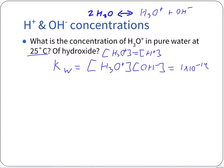For pure water, we would expect that there's no additional hydrogen ions or hydronium being added, and no additional hydroxide being added. One hydronium is made for every one hydroxide made when water decomposes, so the concentration should be the same for both. Let's call each concentration X, giving us 1×10⁻¹⁴ = X times X, or X squared.